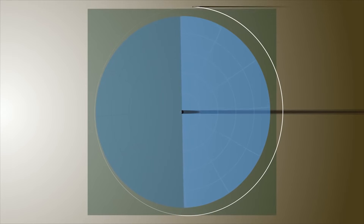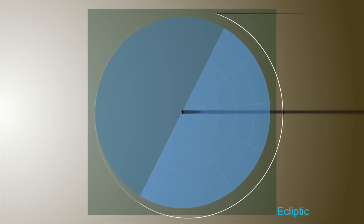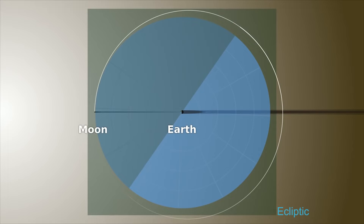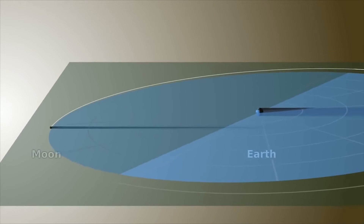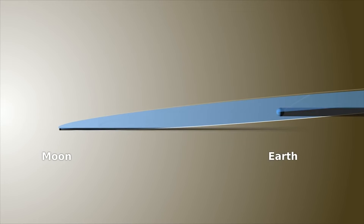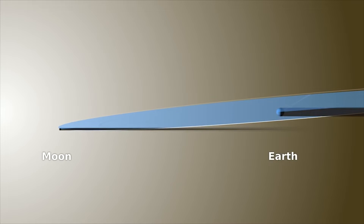The Earth orbits the Sun on a flat plane called the ecliptic, which it shares with all the other planets in our solar system. However, when we look at the Moon's orbital plane, we see it is inclined at 5 degrees with respect to the ecliptic. This means that sometimes, during a new Moon, the shadow cast by the Moon misses the Earth. If this inclination wasn't there, we would have an eclipse every month.